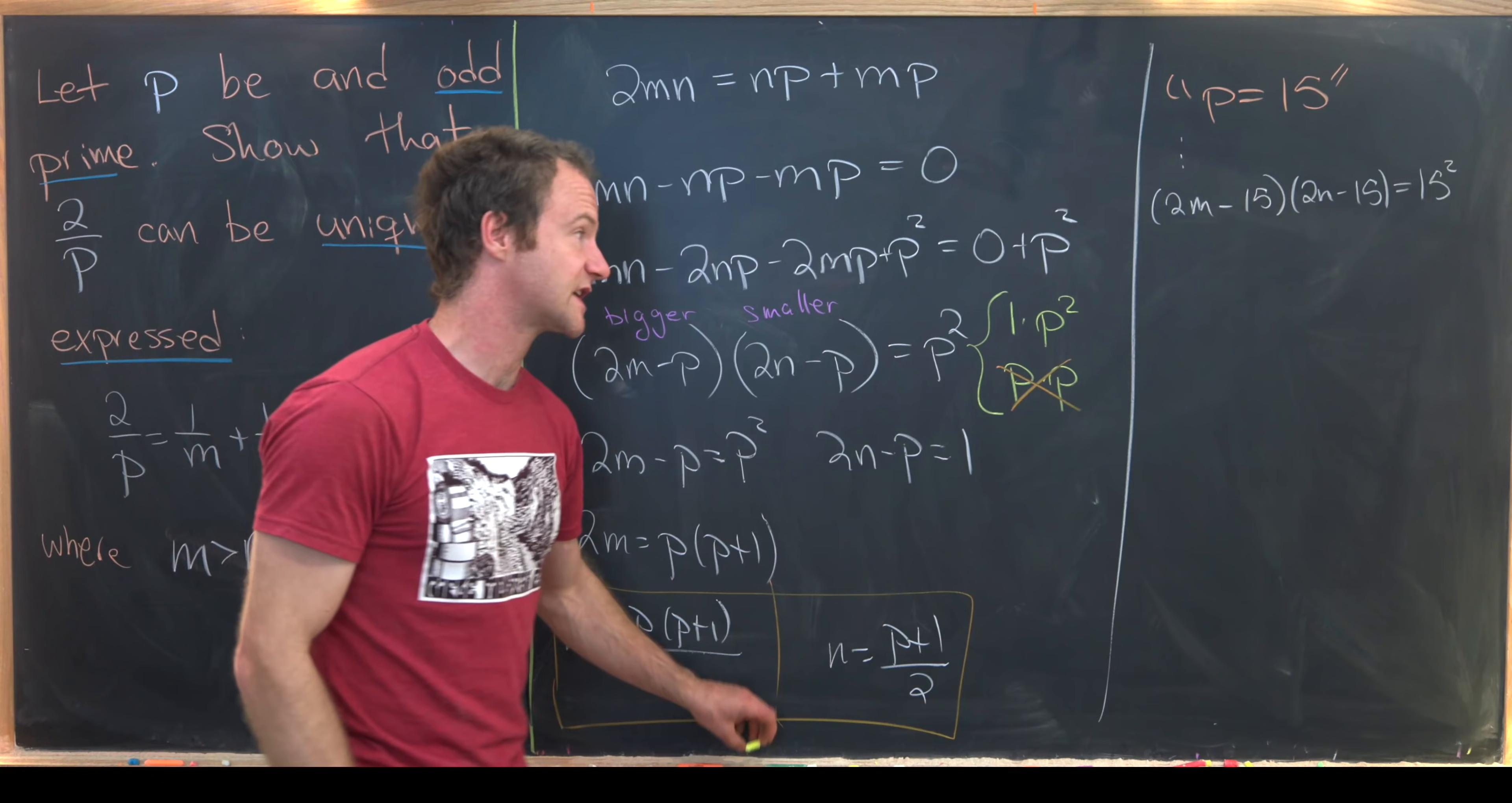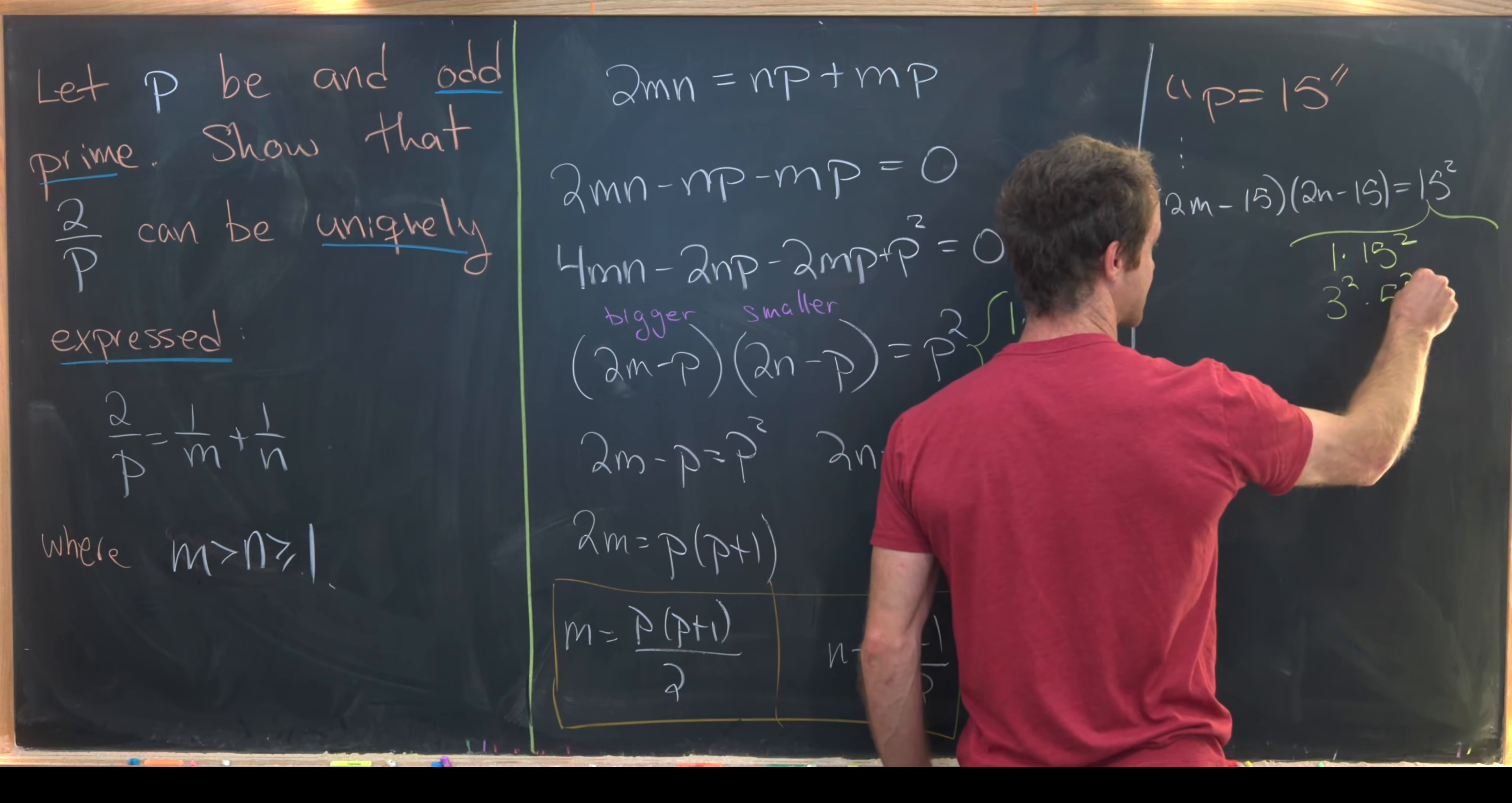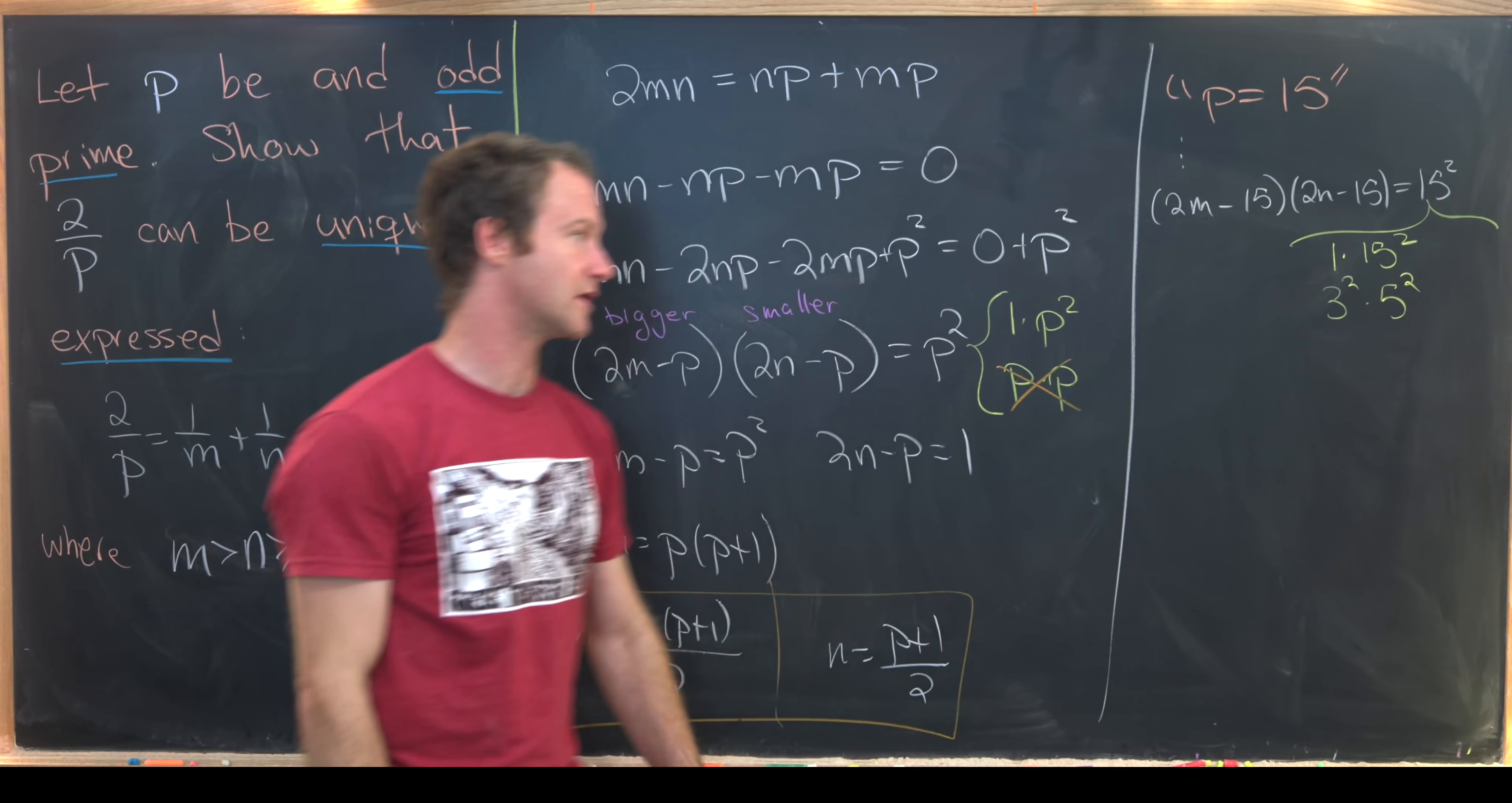So I'll express two of those factorizations. This is by no means all of them. But we can write this as 1 times 15 squared or as 3 squared times 5 squared. There we use the fact that 15 is equal to 3 times 5. And both of those are possible again because we have the same setup where this guy is bigger than the other one is smaller.